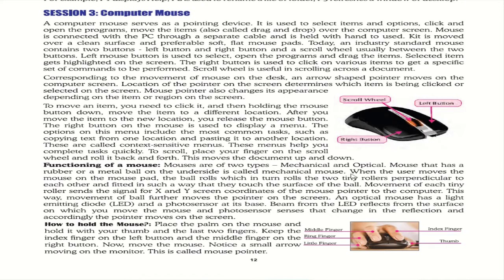There are two types of mouse: mechanical and optical. A mechanical mouse has a rubber or metal ball on its underside. When the user moves it on a mouse pad, the ball rolls and turns two tiny rollers perpendicular to each other, sending signals for X and Y screen coordinates. An optical mouse uses an LED and a photo sensor — the LED beam reflects from the surface to detect movement. Most users today use an optical mouse.